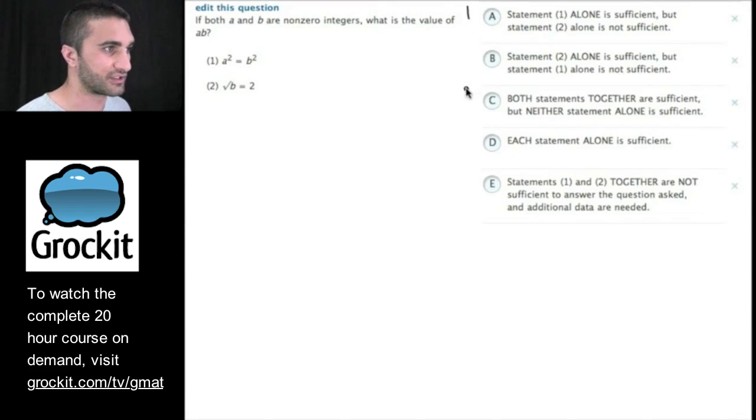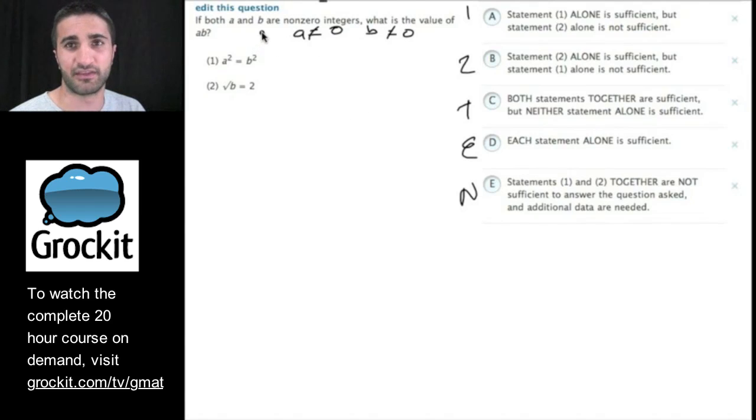So let's take a look at an example of a question. We have a data sufficiency question. At this point, I shouldn't have to keep asking or telling you that we are looking at a 1, 2, 10 situation. Now, let's ask ourselves whether or not what we're dealing with is a data sufficiency yes-no question. So if both a and b are non-zero integers, right, what is the value of a^b? They're not asking me a yes-or-no question here. They really want to know what a^b equals. And we just need to know whether or not we can figure that out. We don't actually have to find the value of a^b. We just have to know whether or not we know what the value of a^b would be given the information that we have.